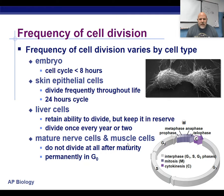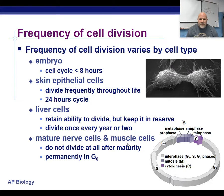We have other cells in our body that divide at a slower rate, mostly only when needed — things like liver cells and other organ cells. And then we have other cells that, once they're fully developed, just stop dividing, like muscle cells and nerve cells.